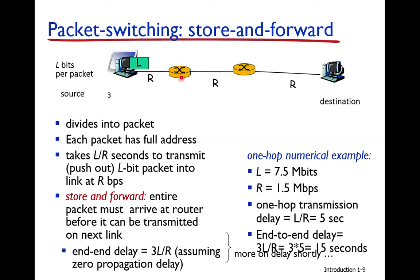Then the router examines the source and destination address and forwards the data on the next link. Since the data is 7.5 MB and the bandwidth is 1.5 Mbps, it takes another 5 seconds on the second link, so 10 seconds total to reach the second router. The second router then forwards the data — another 5 seconds.